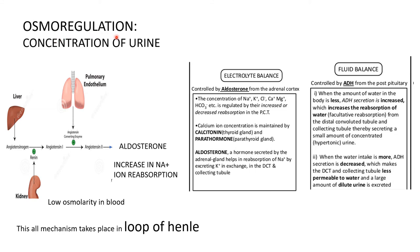Now let's see about osmoregulation. It is a process by which the relative proportion of water and solvents in the body fluids and cells are kept constant — achieved by concentrating the urine. Electrolyte balance is controlled by aldosterone, released from the adrenal cortex. Fluid balance is controlled by ADH — anti-diuretic hormone — released from the posterior pituitary.